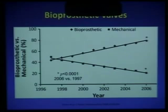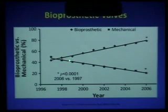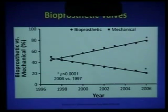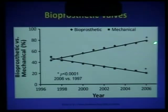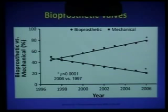Aortic valve replacement data from the Society of Thoracic Surgeons National Database has shown that over the past couple of decades there has been an increase in the use of bioprosthetic valves compared to mechanical valves in the aortic position. Lack of the need for anticoagulation, greater emphasis on patient preference, and decreased mortality and morbidity associated with cardiac re-operation are probably responsible for this trend. By 2006, almost 70 to 80 percent of valves implanted in the aortic position across all ages were bioprosthetic. In the mitral position, mechanical valves are still popular, but bioprosthetic valves are increasingly being used.